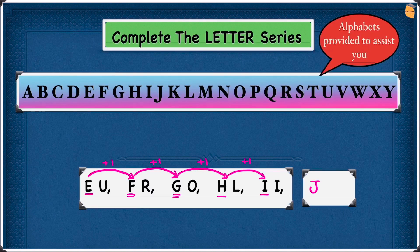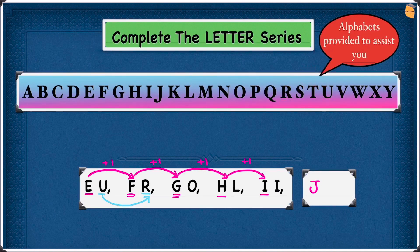Now let's find the second part of our answer — the second letter this time. So U and R. What do we have to do from U to get to R? Looking at the alphabet, U is here and R is here. We have to move 1, 2, 3 — three steps backwards. So that will be minus 3. Write minus 3.